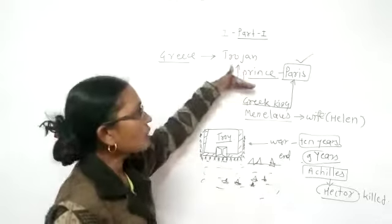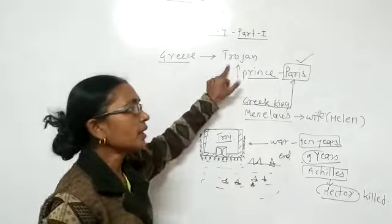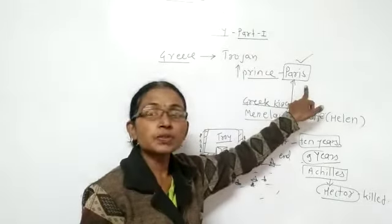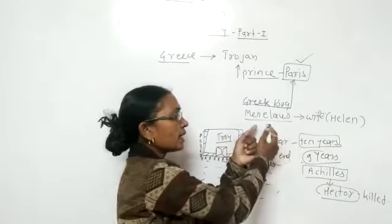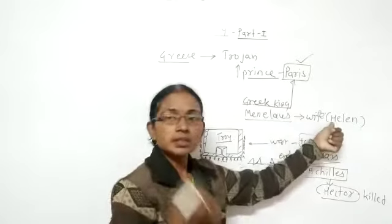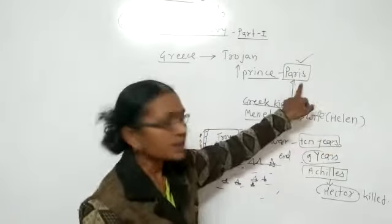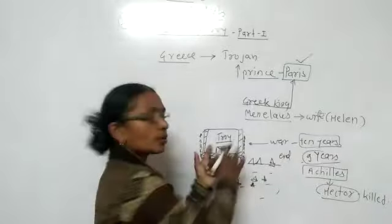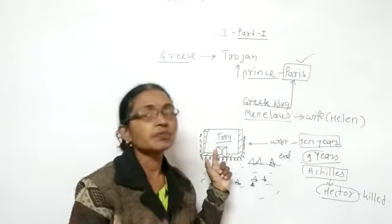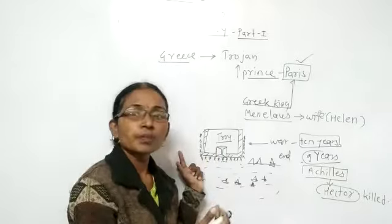The prince of Troy, Paris, persuaded the great king Menelaus' wife Helen. Paris persuaded Helen and brought her to Troy. This was the incident which caused the fall of Troy.